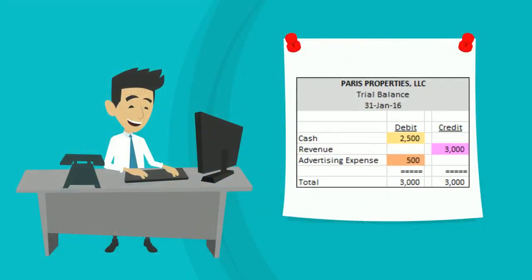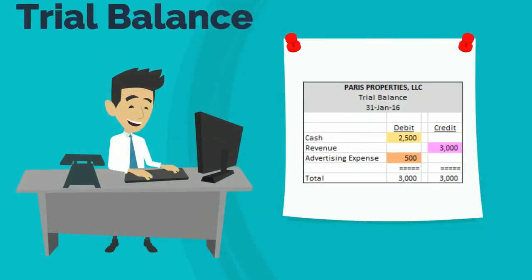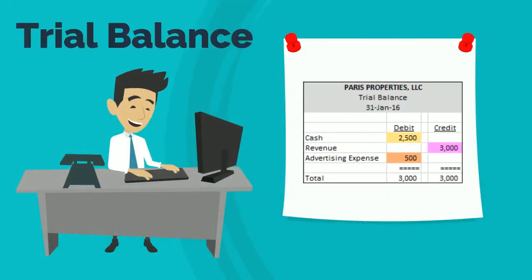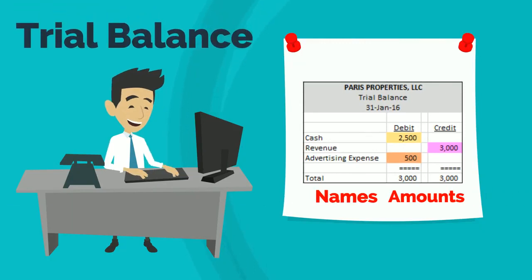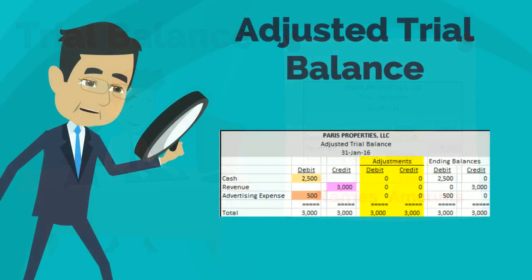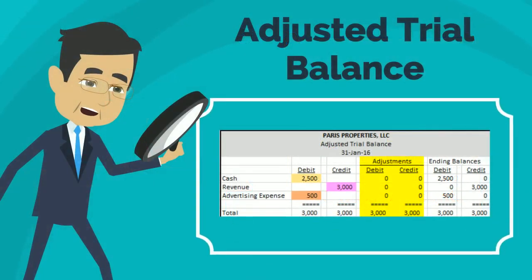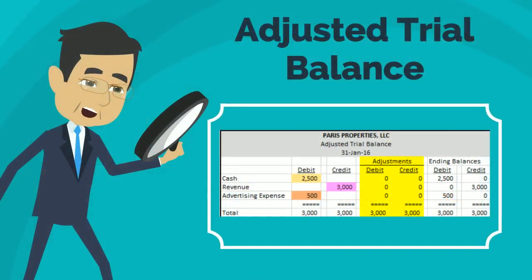The trial balance shows only the ending balances by name — no account numbers — and it's the start of producing the financial statements. The adjusted trial balance is what is produced after adjustments are made in order to follow the accounting rules. We'll cover this later.